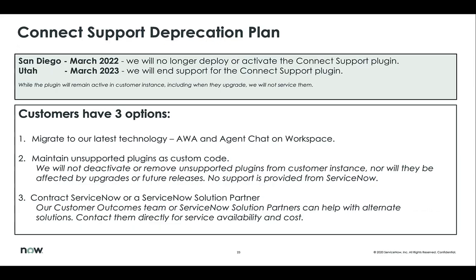Here is the Connect support planning timeline. In San Diego, March 2022, we will no longer be deploying or activating the plugins — those Connect support plugins won't be visible. In Utah, March 2023, we are ending complete support for all those plugins, which means that if customer instances still have Connect support, they'll be maintaining it by themselves — from ServiceNow, there won't be any support. With that said, there are three options for customers. The best is to migrate to our latest technology, which is advanced work assignment and agent chat on workspace, which has many more capabilities compared to Connect support and makes your agents much more effective.